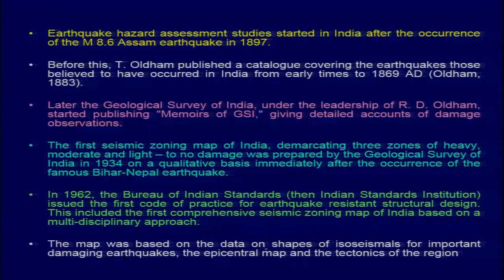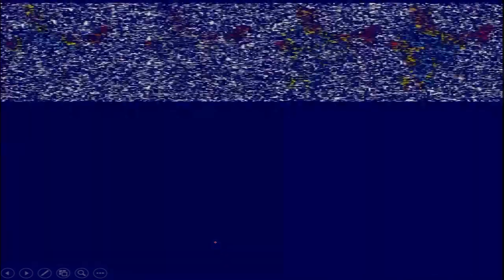The map was based on the shapes of isoseismals prepared considering damage patterns, isoseismals for important damaging earthquakes, epicentral maps, and tectonic structures of the region. Looking at the transformation of different maps — versions A, B, C, and D — they were updated over time based on accumulating information. Earlier there were more than 5 zones, then reduced to 5, and currently only 4 zones remain.